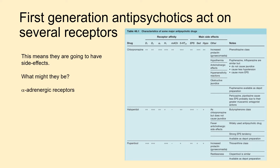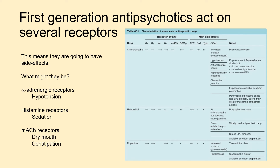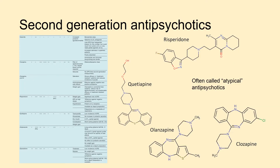Action on alpha-adrenergic receptors produces hypotension as a side effect. Histamine receptor blockade causes sedation. Muscarinic receptor blockade causes dry mouth, constipation, and urinary retention — exactly the same anticholinergic profile seen with other drug classes.